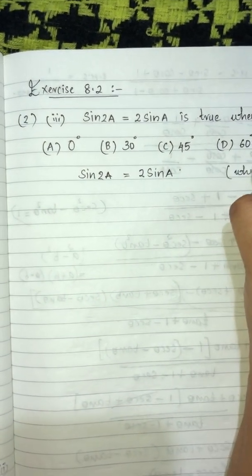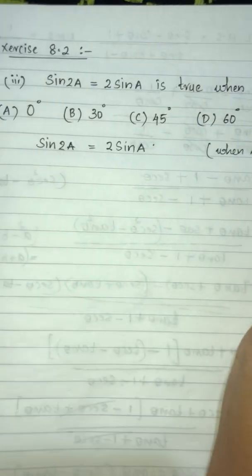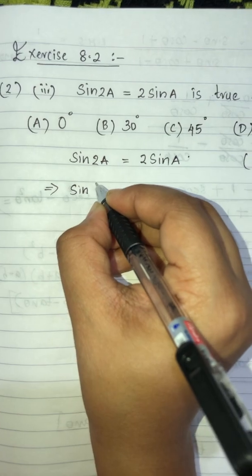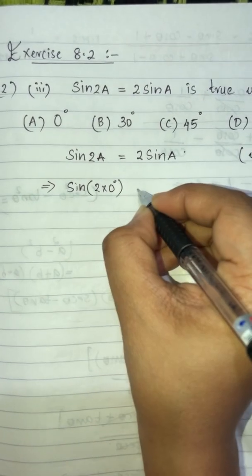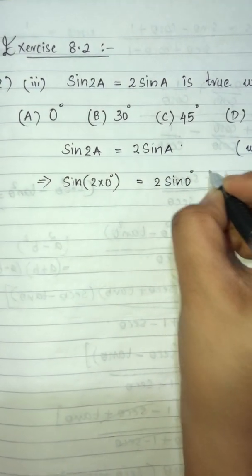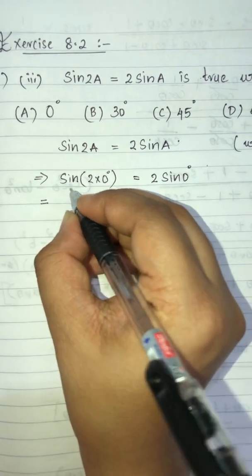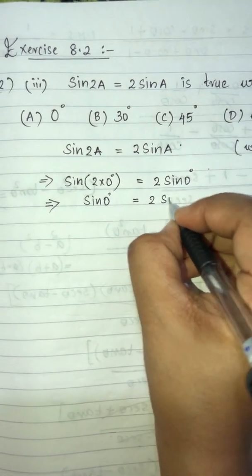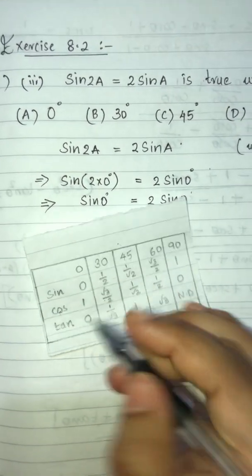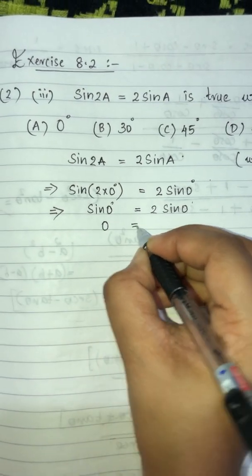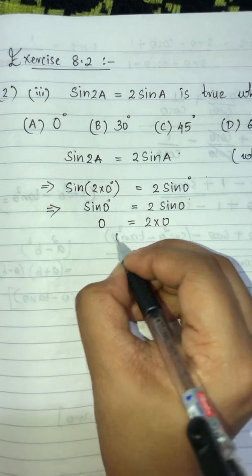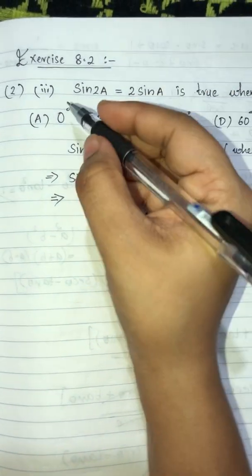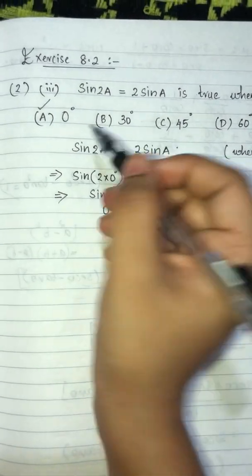When a = 0°: sin(2 × 0°) = 2 sin 0°. That gives sin 0° = 2 sin 0°, which is 0 = 0. This is true, so option A, a = 0°, is correct.